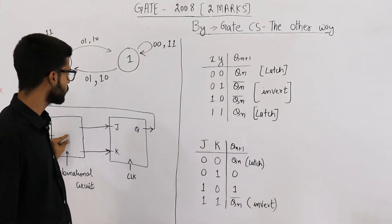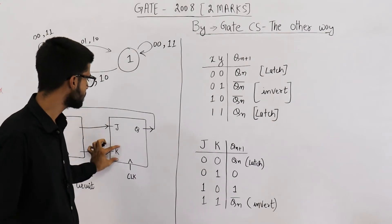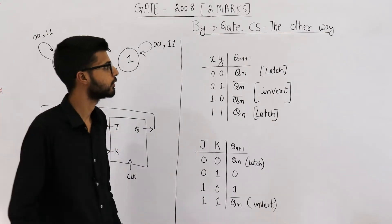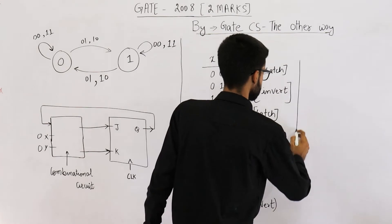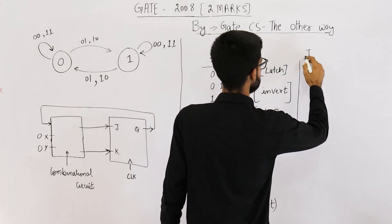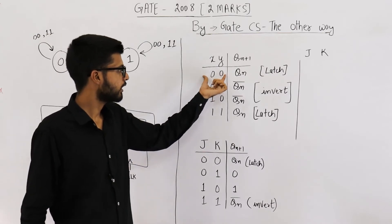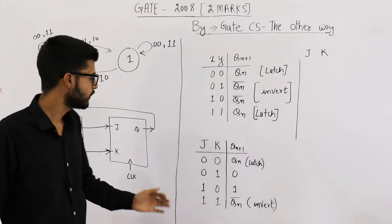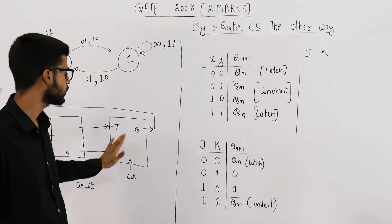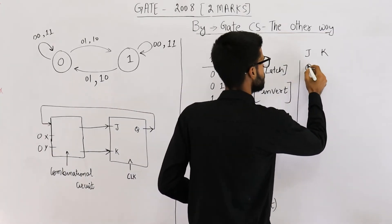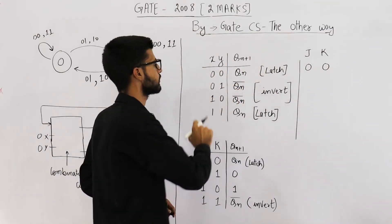So 0,0 input must pass as it is to this JK. So whenever the inputs applied are 0,0, we want that 0,0 to be transferred to JK as it is. So JK are 0 and 0 in this case.